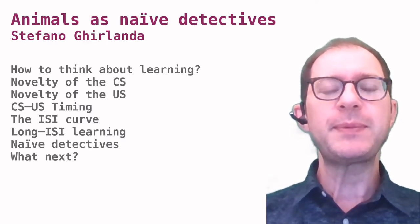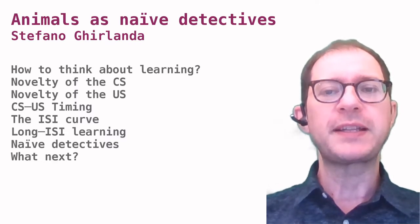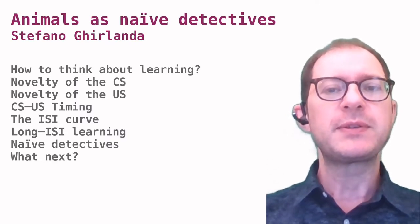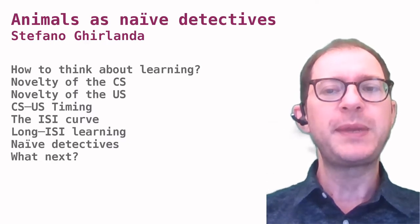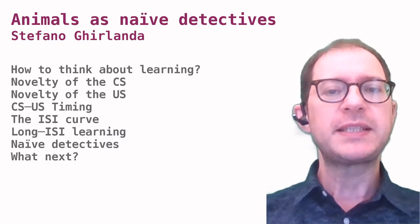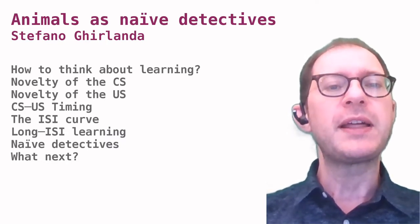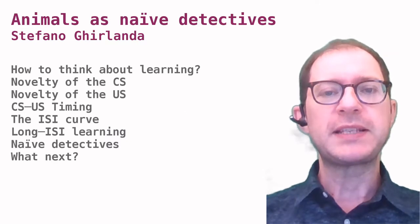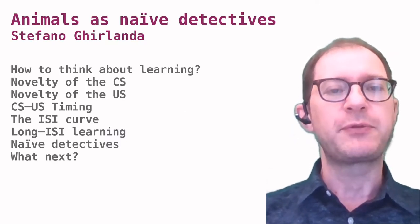In these experiments we will see how conditioning is affected by several factors. That is, we will consider whether the animal is already familiar or not with the CS and US when the experiment starts, and how the CS and US follow one another in time. Future lessons will discuss other things that can influence conditioning.